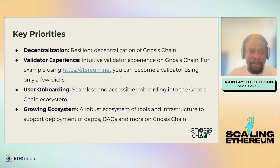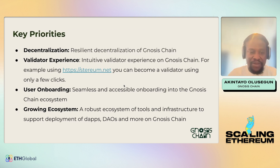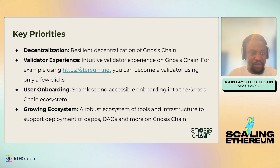Key priorities Gnosis Chain strives to achieve: first is decentralization — we want to be the most decentralized chain. We also prioritize validator experience with an intuitive dashboard. For example, using Stakewise.net, with just a few clicks and in a few minutes you become a validator and everything is set up for you. User onboarding is also very seamless and accessible, and there is a robust and growing ecosystem with many dApps already deployed.